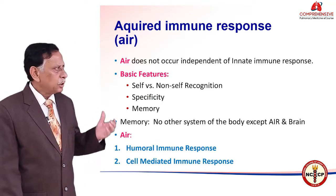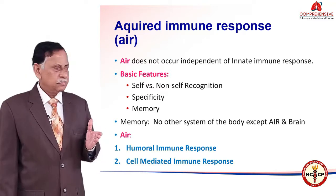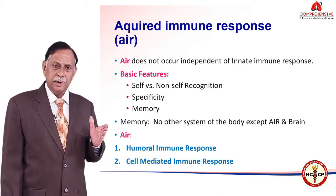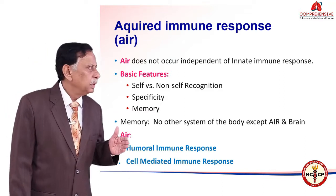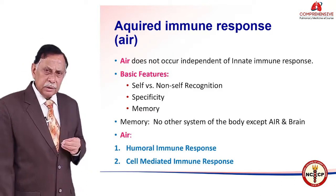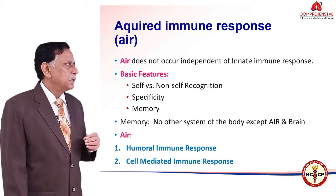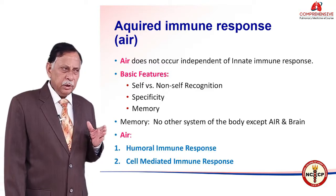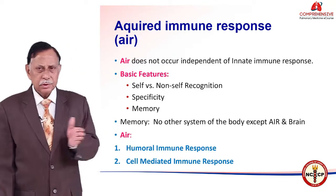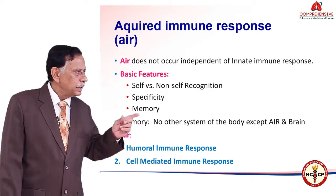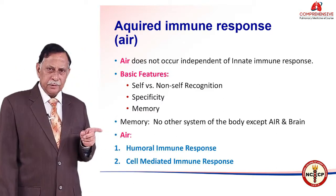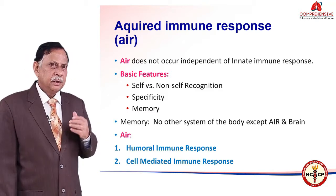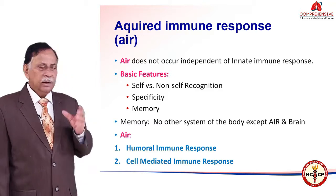Coming to the second part — acquired immune response. Acquired immune response does not occur independent of innate immunity, so there should be some innate immune response present. The important feature of acquired immune response is self versus non-self recognition — they know what is abnormal and what is normal. Memory is there, specificity is there. Therefore, a person who is allergic to one particular substance, whenever they come in contact with that allergen again and again, will have a reaction.